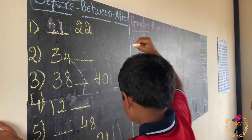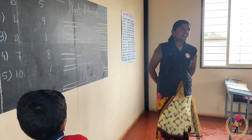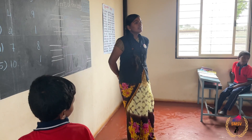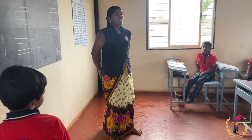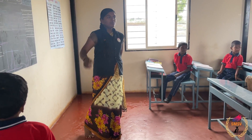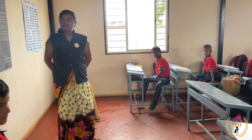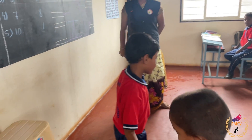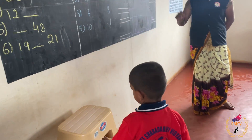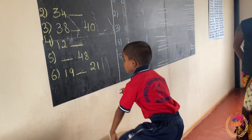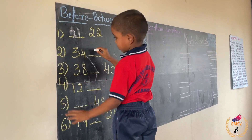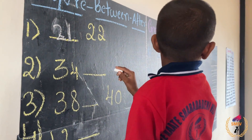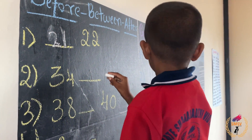Good. Two on the right, after 34 — two on the right, 34. Come and try. Come and write down what is the number after 34. Very good.